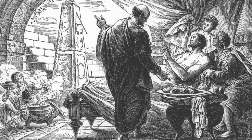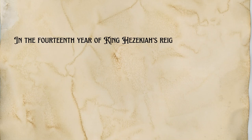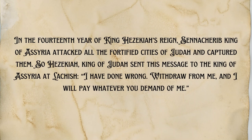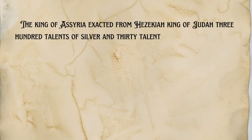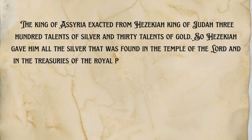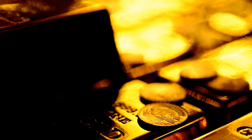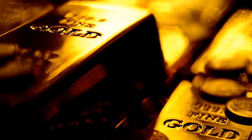It reads: In the 14th year of King Hezekiah's reign, Sennacherib king of Assyria attacked all the fortified cities of Judah and captured them. So Hezekiah king of Judah sent this message to the king of Assyria at Lachish, 'I have done wrong, withdraw from me and I will pay whatever you demand.' The king of Assyria exacted from Hezekiah 300 talents of silver and 30 talents of gold. So Hezekiah gave him all the silver that was found in the temple of the Lord and in all the treasuries of the royal palace. At this time Hezekiah stripped off the gold with which he had covered the doors and doorposts of the temple of the Lord and gave it to the king of Assyria. So hold on — Hezekiah has made this humbling tribute, giving all the silver in the house of the Lord, all the treasures of the king's house, and even stripping the gold from the temple doors. How on earth was he able to show all of this wealth to the Babylonian envoys shortly after his humiliation?